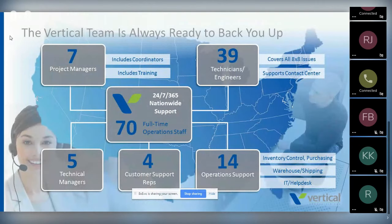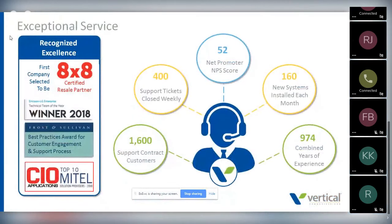We allow 90 days after the implementation for a success assurance phase. The SE and project manager remain attached for 90 days to make sure you have no issues, no questions, and you are satisfied. As we transition into the support phase, we have a full staff of 70 full-time operations professionals there to support you — making sure you get what you need when you need it, 24/7, 365, based on your tier and service agreement. We provide exceptional service: we close 1,600 tickets a week, do 160 new installs every month, and have 974 combined years of experience.